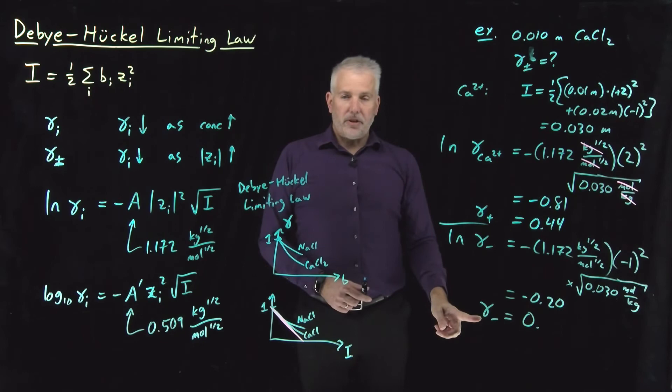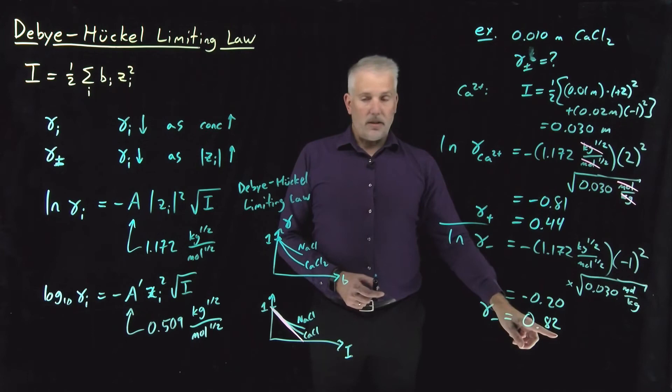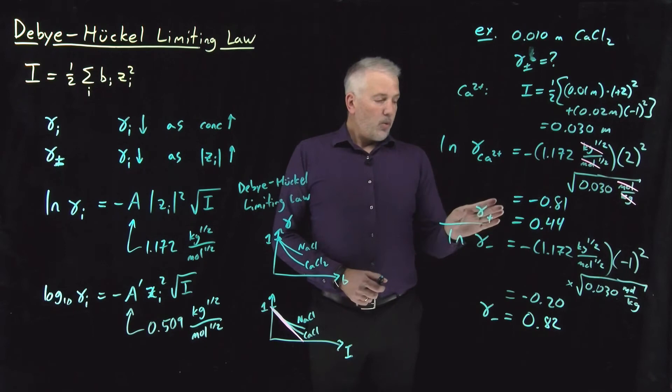which means that the activity coefficient for the anion is e to the negative 0.2, which is 0.82. So again, the anion, because it's singly charged, is considerably less non-ideal than the cation, which is more strongly charged.